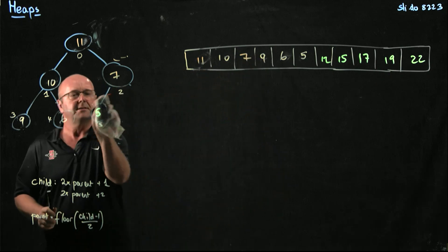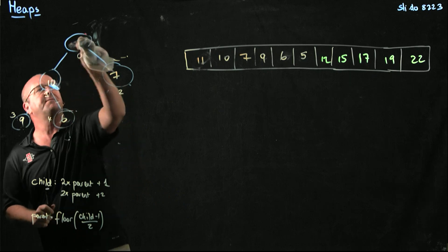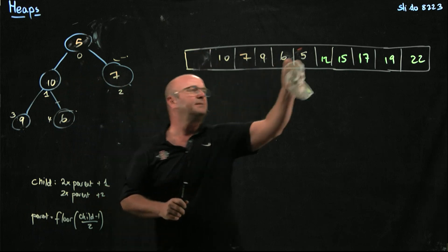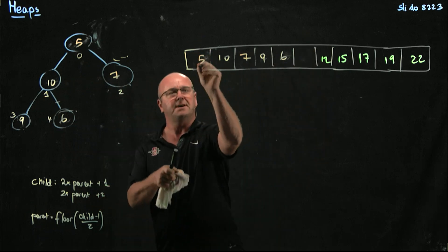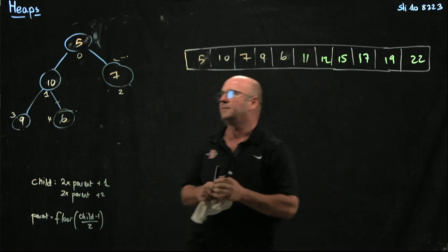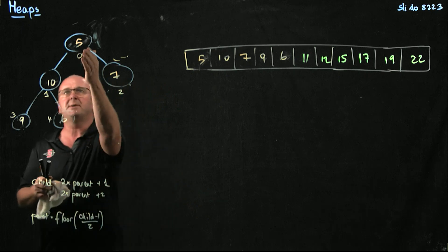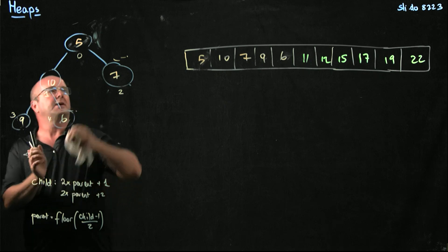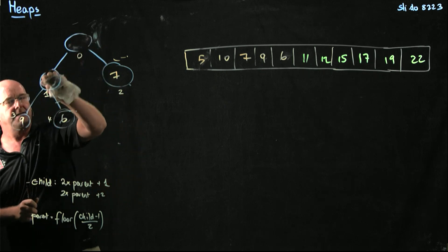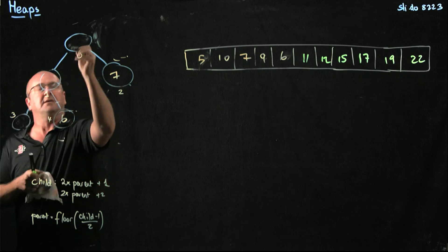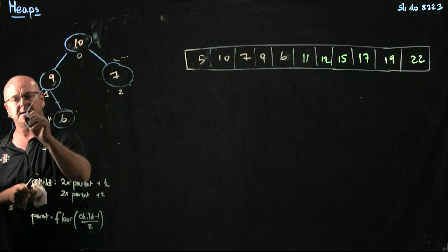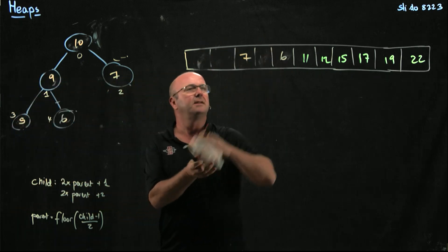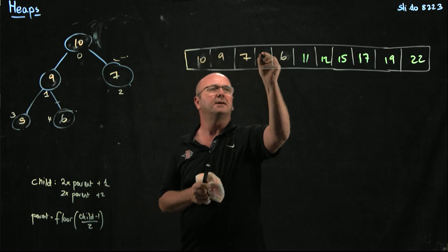Now we're going to take away the 11. The way that we take away the 11 is that we swap it with the 5. We take away the 11, put the 5 in its place, and we put the 11 there. Now we've got to fix the heap again. We're going to swap the 5 with the 10, the 10 with the 9, so we're going to end up with 10, 9, 5.